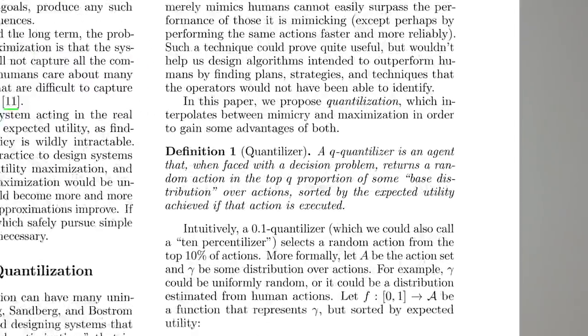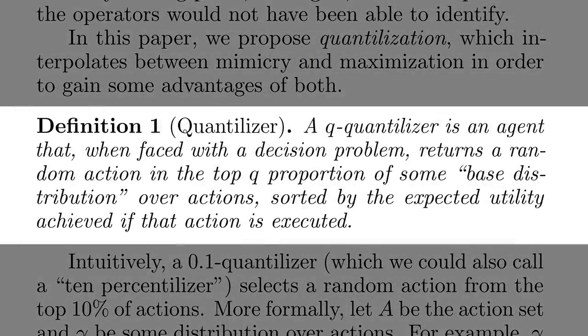So what exactly is a quantalizer? Let's look at the definition in the paper. A q quantalizer is an agent that, when faced with a decision problem, returns a random action in the top q proportion of some base distribution over actions, sorted by the expected utility achieved if that action is executed.